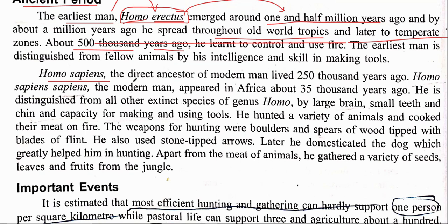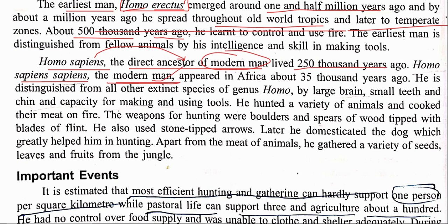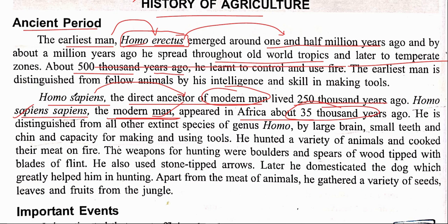Homo sapiens is the direct ancestor of modern man — it is not modern man itself. Modern man is Homo sapiens sapiens. Homo sapiens lived 250,000 years ago, while Homo sapiens sapiens, the modern man, appeared in Africa about 35,000 years ago. Remember: Homo sapiens = direct ancestor, 250,000 years ago; Homo sapiens sapiens = modern man, 35,000 years ago.